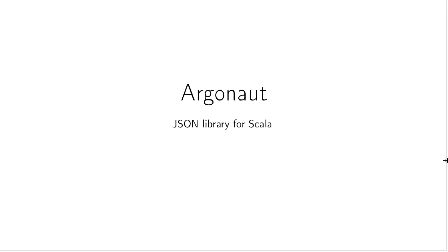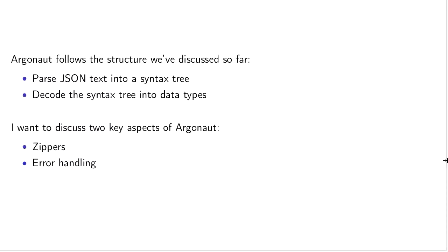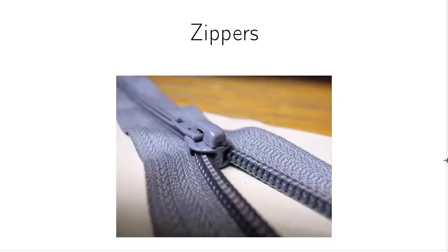The first library I'm going to talk about is called Argonaut. It's a JSON library for Scala. I think it's the best JSON library in the universe, although I haven't seen all of them. I really like some design decisions in Argonaut. It follows the structure we've discussed: it parses JSON into a syntax tree and then decodes that syntax tree into data types. There are two key aspects I want to get into: zippers and Argonaut's method of error handling.